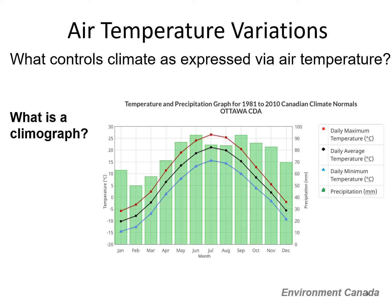Most often, climate data is a 30-year average. The data shown here is from Environment Canada and is for the City of London. The x-axis shows month. The y-axis on the left shows temperature and on the right, precipitation.